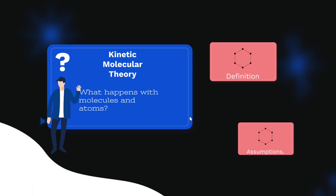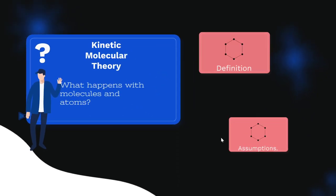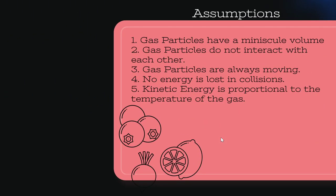For kinetic molecular theory to work, we have to make a couple of assumptions. The first assumption is that any gas particle has a minuscule volume, meaning the actual particles of the gas themselves are not going to take up a lot of space.